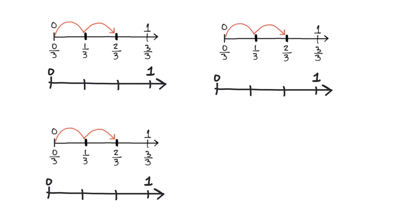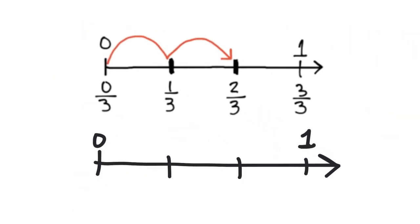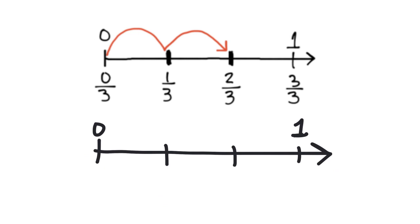I've got a bunch of copies of the exact same number line here. So let's zoom in on one of these. What we see is a number line representing two thirds, because I've cut it from zero to one into three pieces and we're highlighting two of them. So there's two thirds.